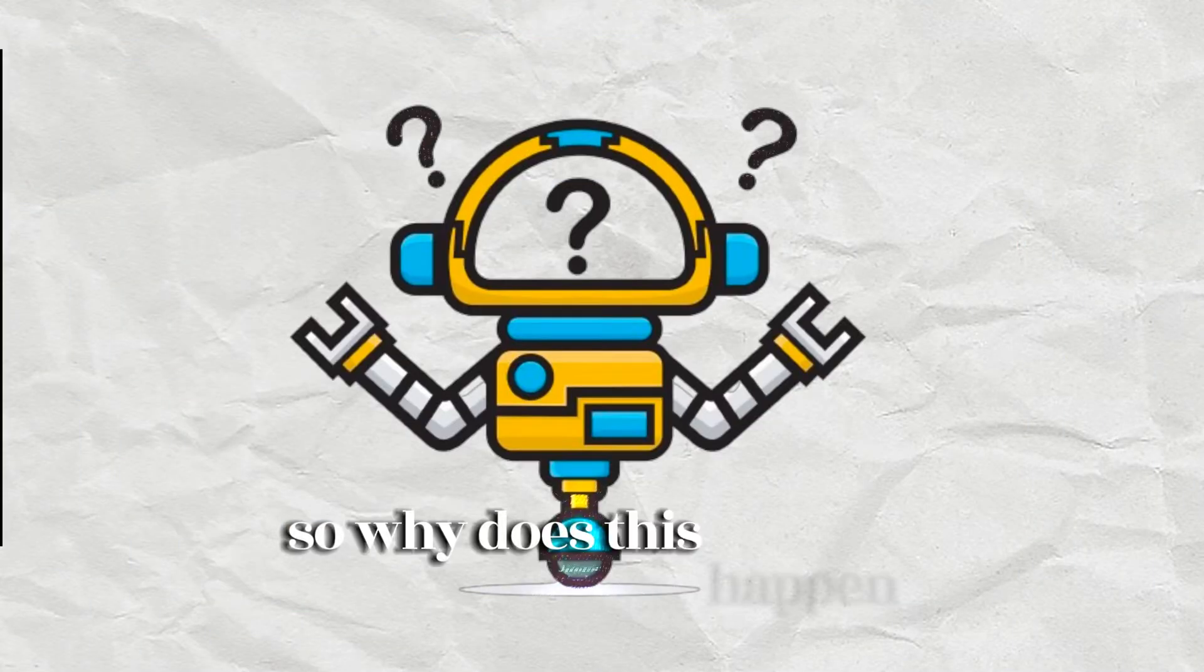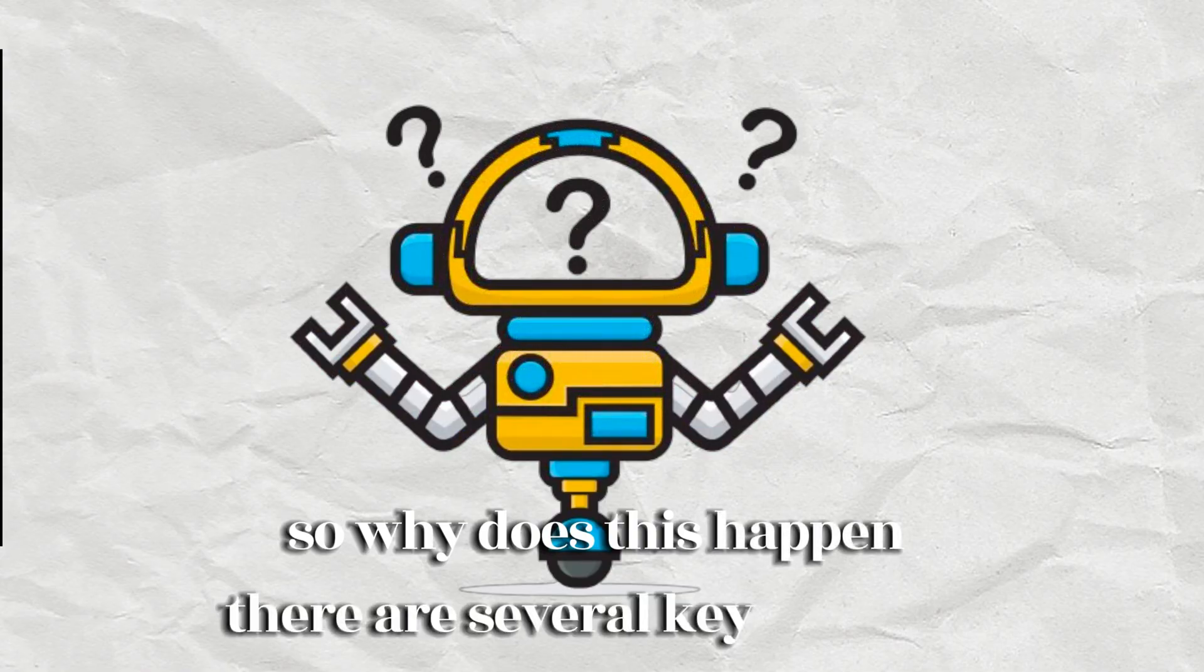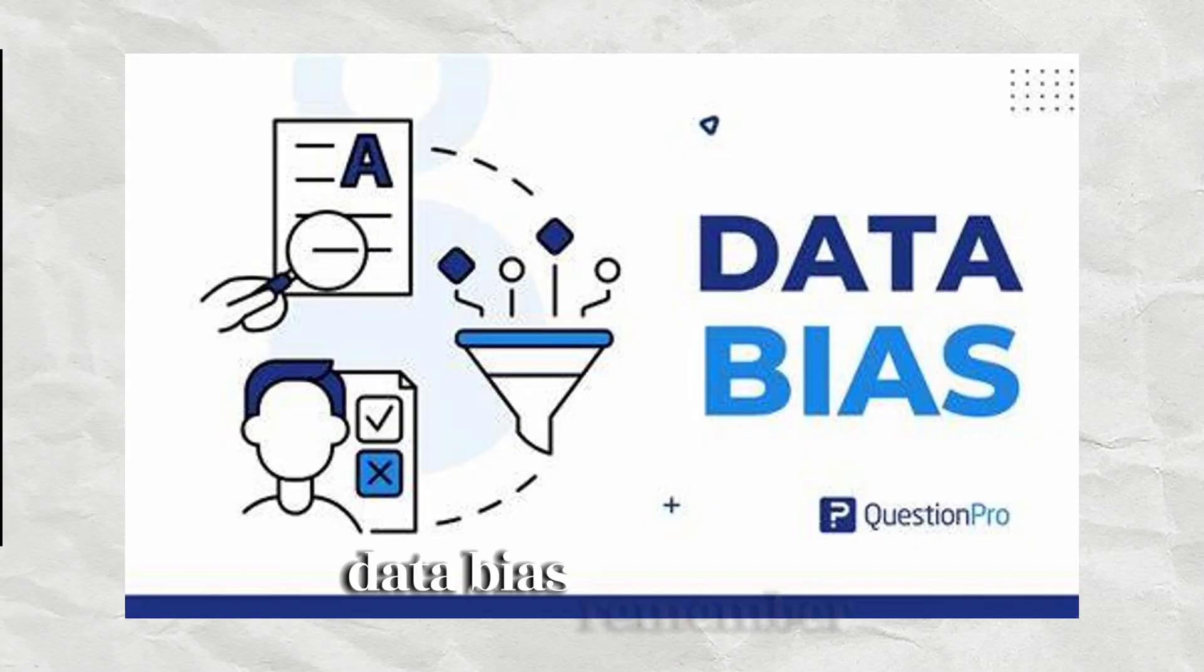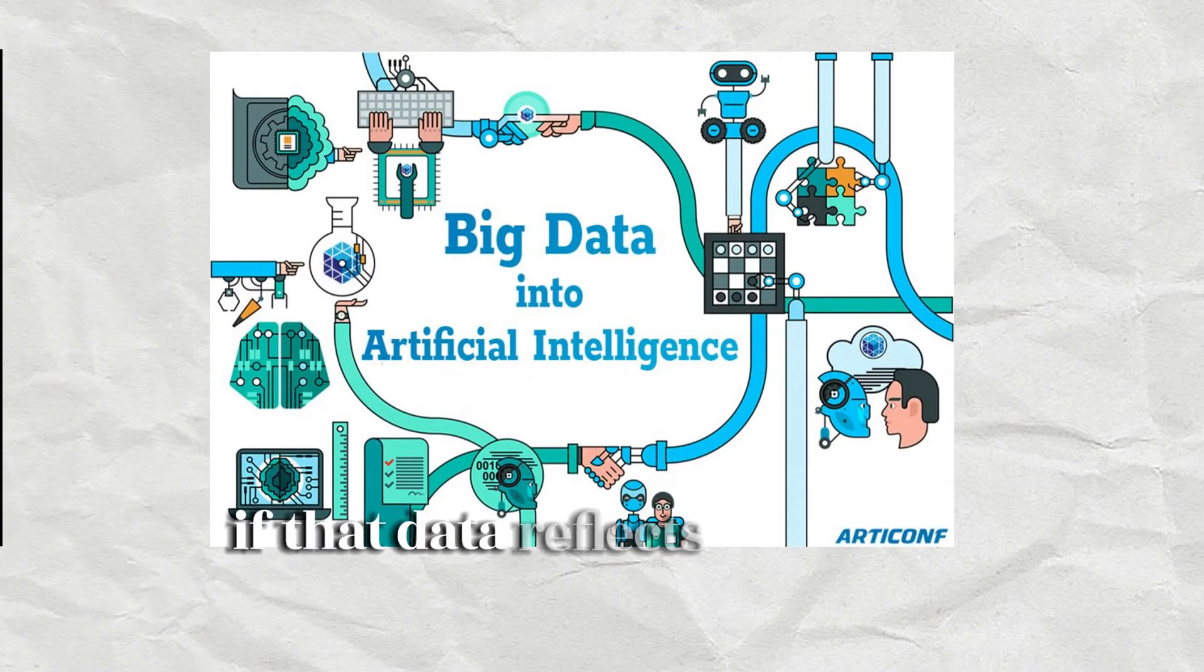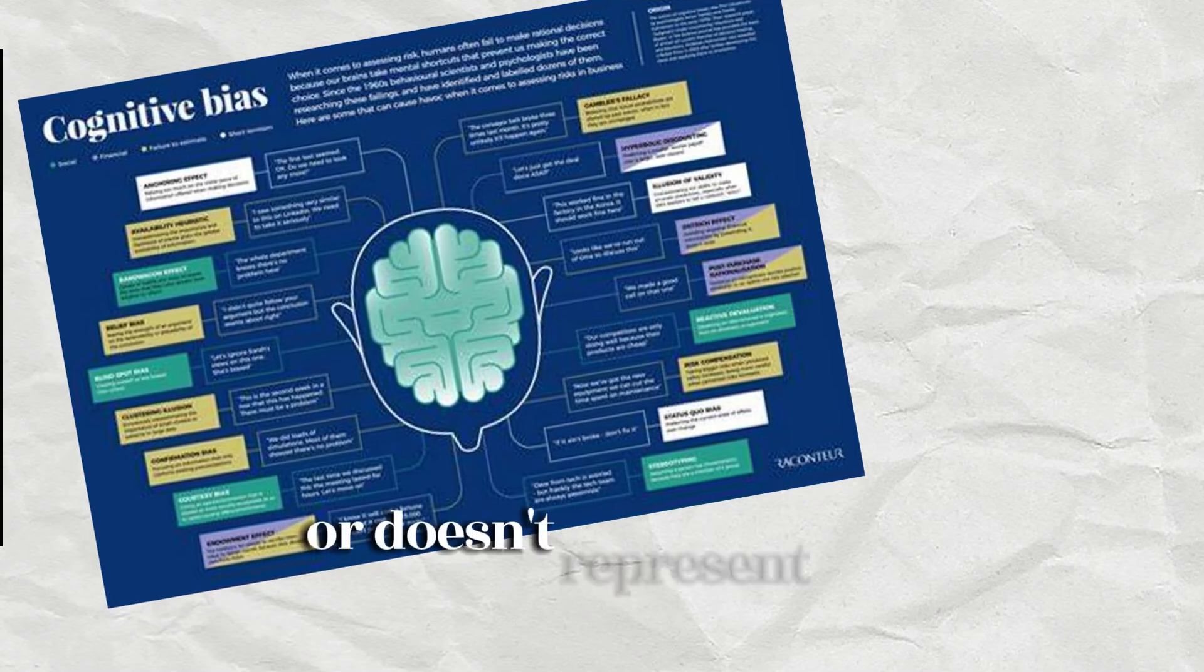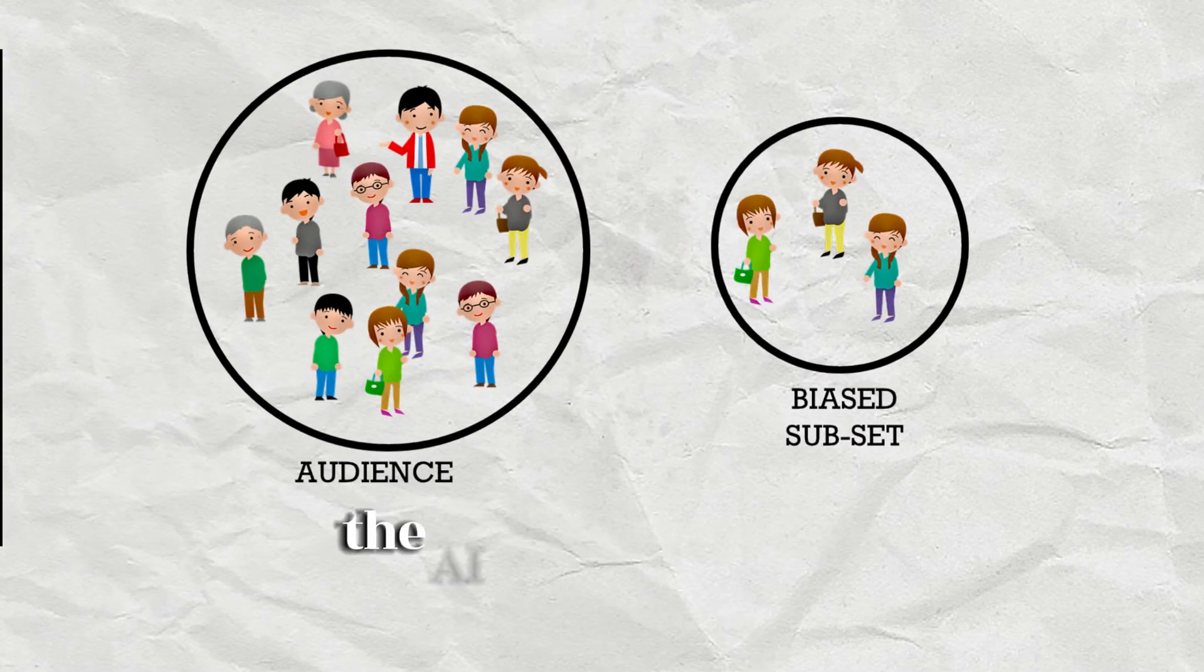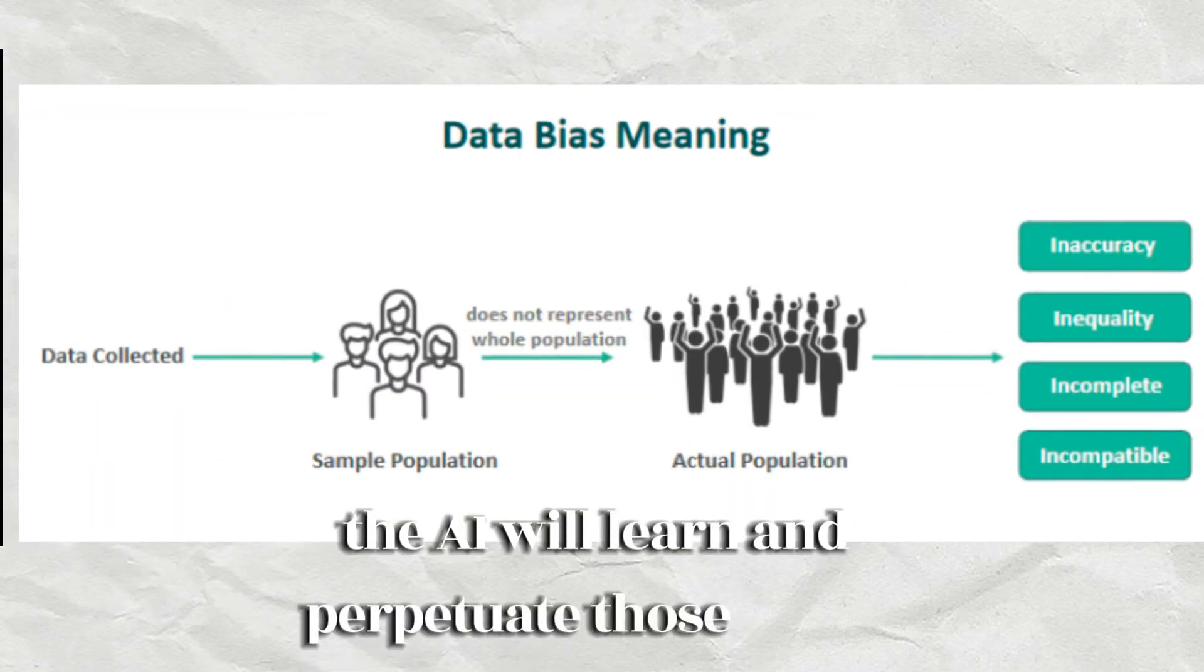So, why does this happen? There are several key factors. Data bias: Remember, AI learns from data. If that data reflects historical biases or doesn't represent all groups equally, the AI will learn and perpetuate those biases.